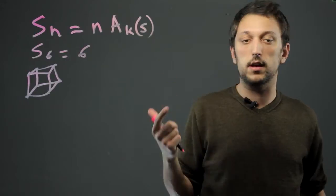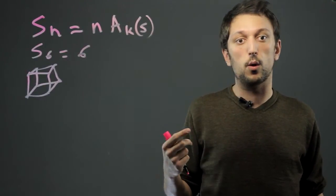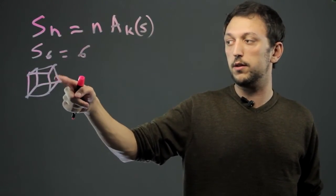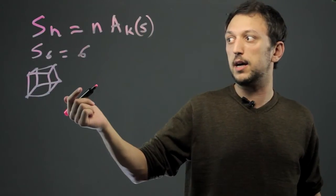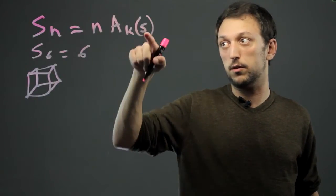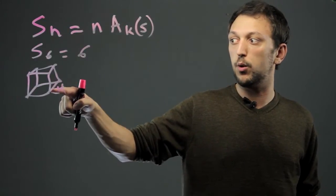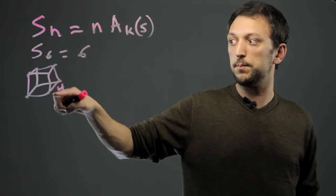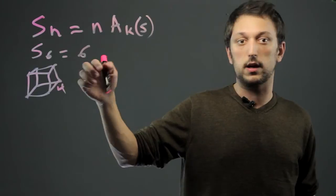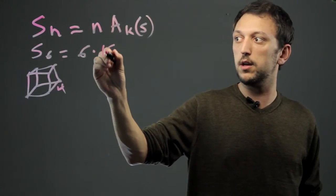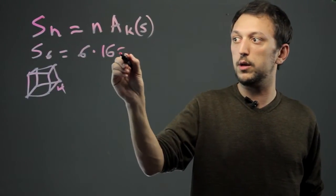Now AKS is the surface area for one of the faces. So in this case, let's say the side length - the small s being the side length - let's say the side length is four. So we would have a face of four by four, which is 16. So it's six times 16, which equals 96.